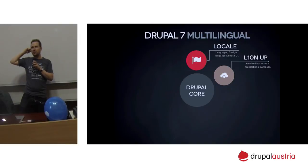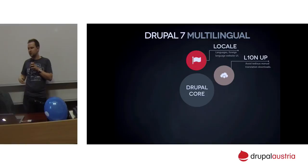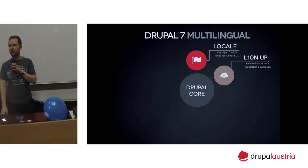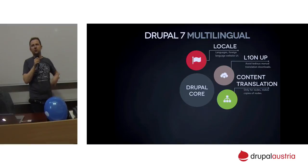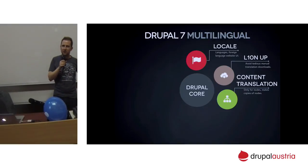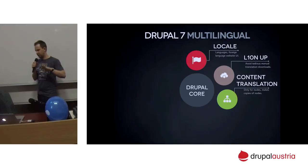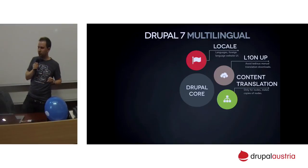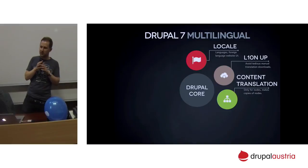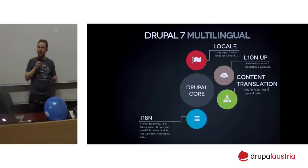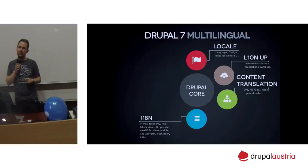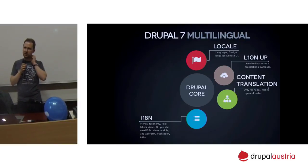So you enable the localization update module, which automates downloading translations. But you still only translate the software itself. Then you enable the content translation module to finally translate your content — it makes different copies of your content pieces. But now you want to put content into menus, and there's no way to translate menus. So you enable the i18n module, which gives you several other modules to translate menus and taxonomy terms.